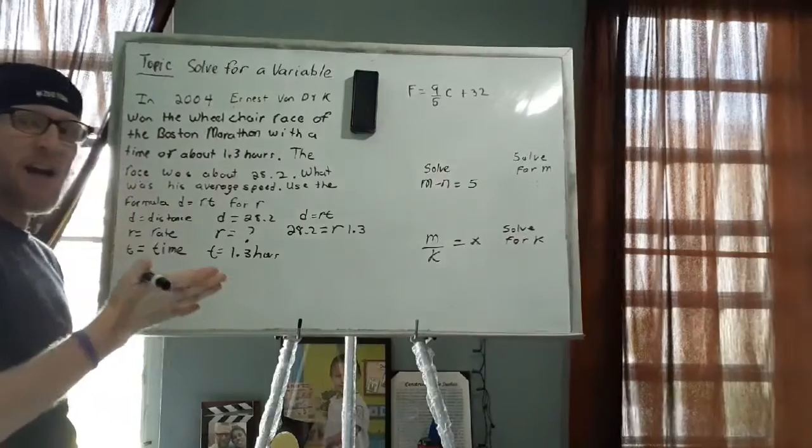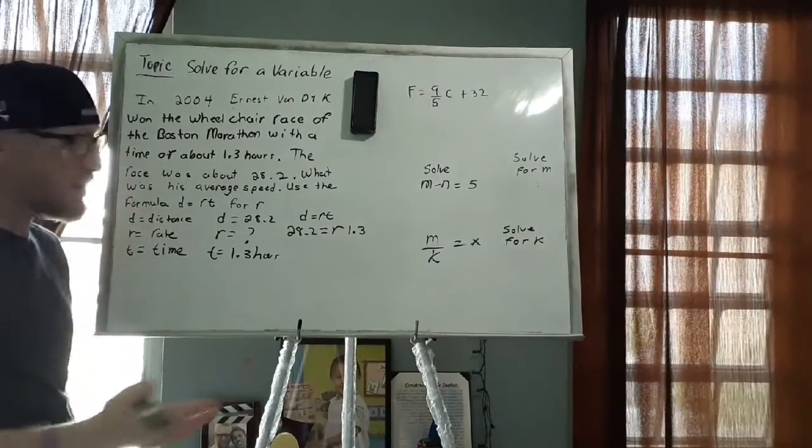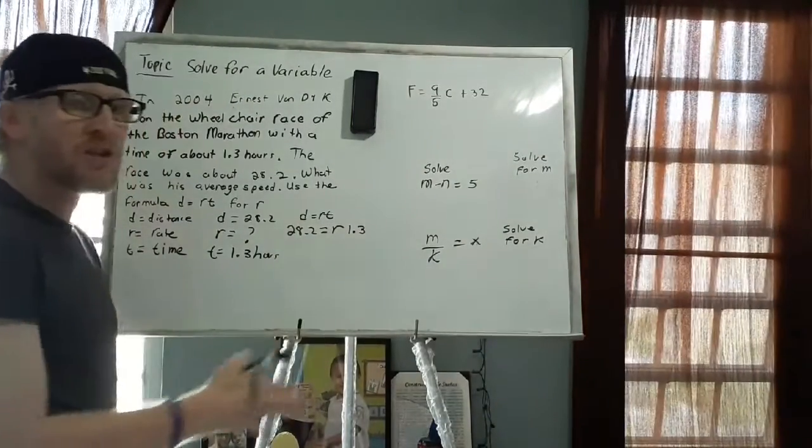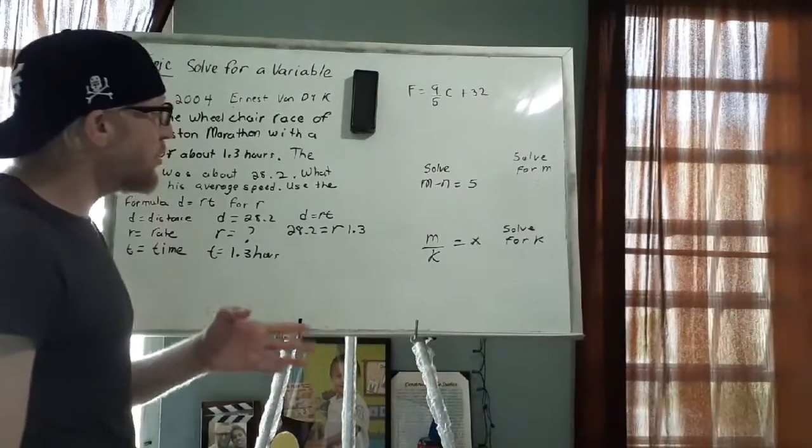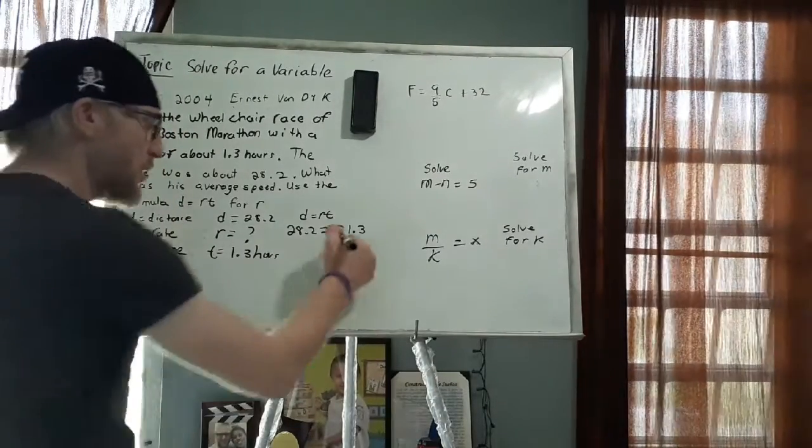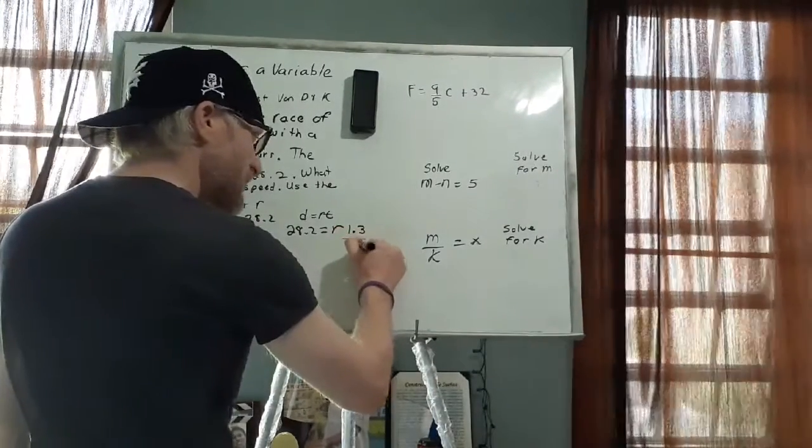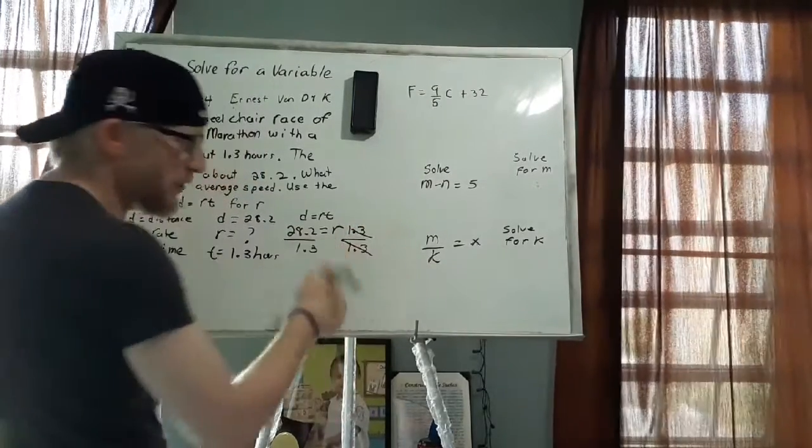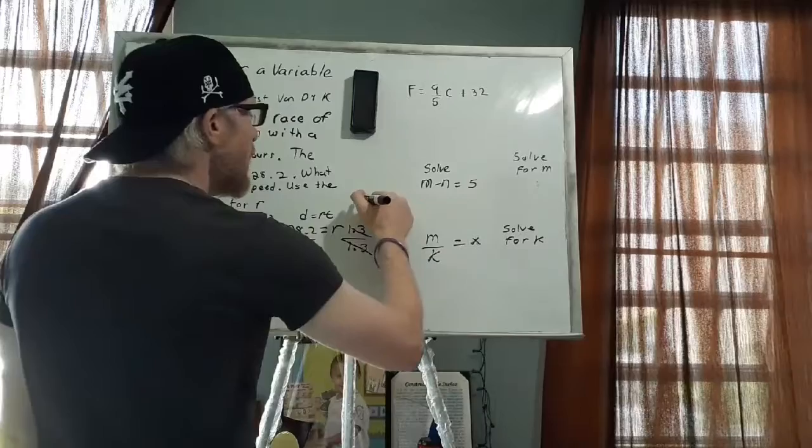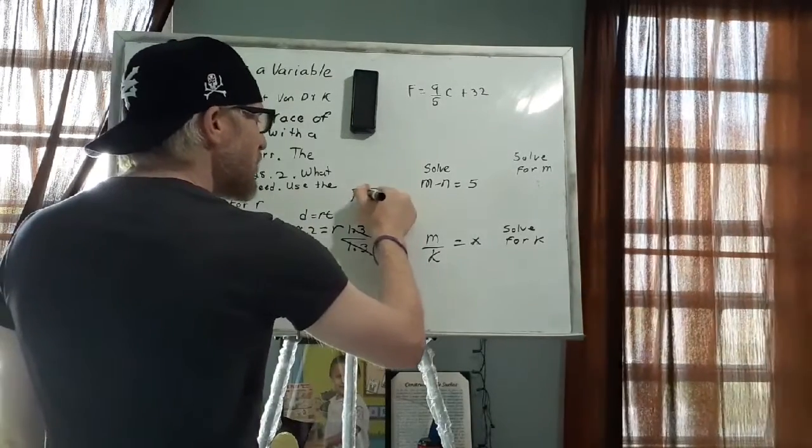So what we're going to do is simply rewrite the formula D equals R times T but we're just going to plug in the numbers. So we're going to say 28.2 equals R which is what I'm looking for and my time which is 1.3. Now, if you look at it, I have a multiplication equation, right? Because R times 1.3 is going to equal 28.2, I just don't know what the value of R is. So what I'm going to do is actually divide everything by 1.3. This is going to cancel out. Now I have to divide 28.2 by 1.3. And whenever you divide decimals, we turn them into whole numbers.